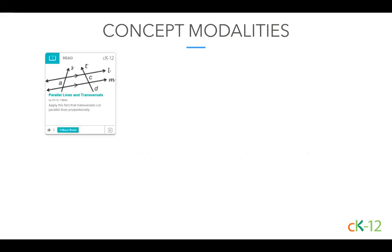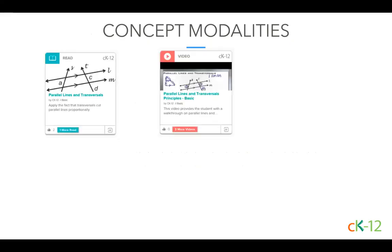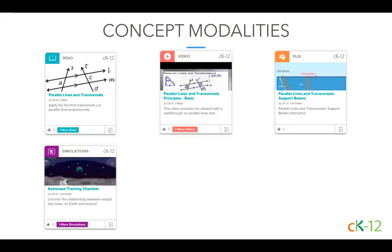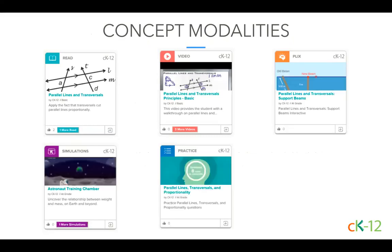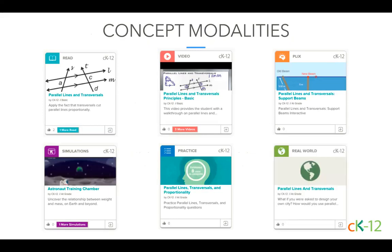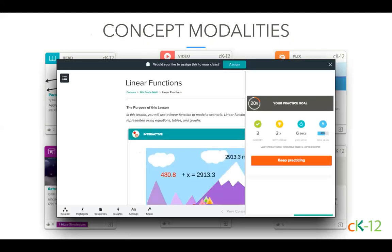CK12 organizes its content into concepts and supports each of these distinct skills with a variety of modalities. The types of modalities you can assign to your students in a Google Class include reads, videos, Plix Interactives, simulations, practice, customized practice that we call quizzes, and real-world application. Note that our 2.0 Flexbook version of each concept combines the read and the practice in a single assignment.